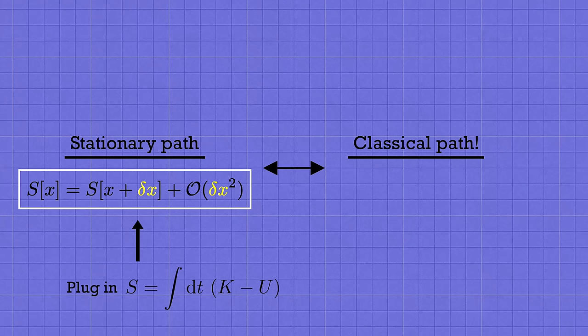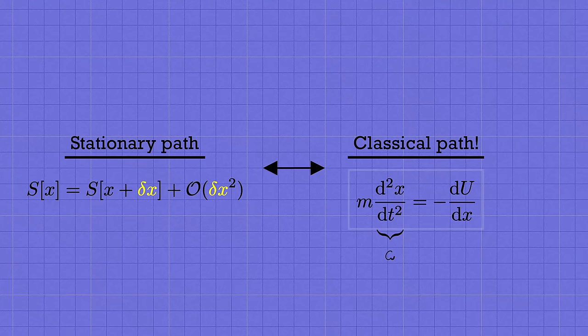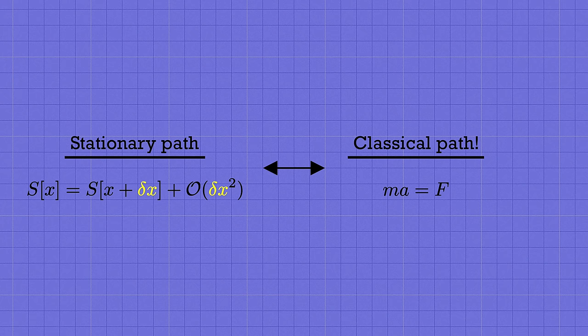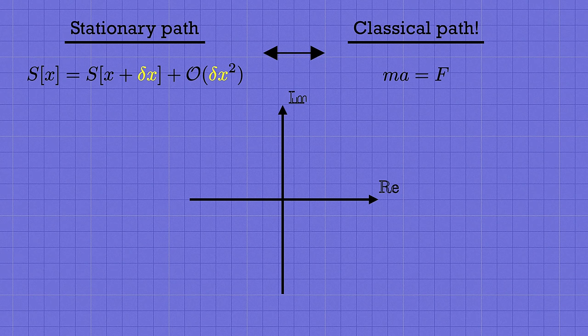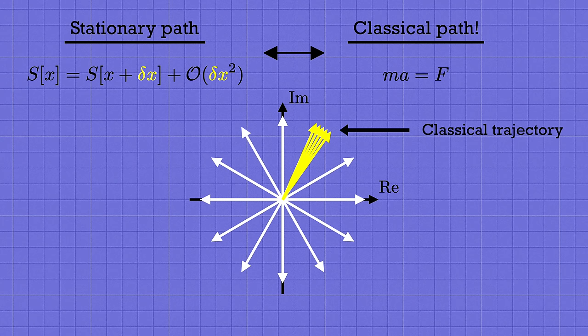m times the second derivative of x with respect to t equals minus du by dx. And that's nothing but f equals ma. Because remember, the force on the particle and the potential energy are related by force equals minus the slope of the potential. This is how the path integral predicts f equals ma. It's not that the classical trajectory makes some huge contribution to the sum that dominates over all the other terms. Every term in the sum has the same magnitude, one. The classical path wins out because that's where the action is stationary. And so the arrows near that trajectory all point at the same angle and they add together instead of getting cancelled out.